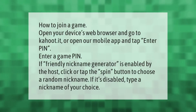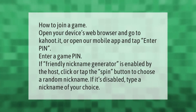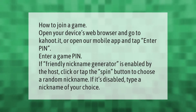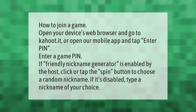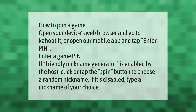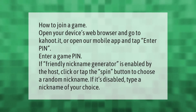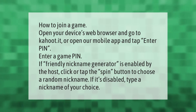How to join a game: open your device's web browser and go to kahoot.it, or open our mobile app and tap 'Enter Pin.' Enter a game pin. If a friendly nickname generator is enabled by the host, click or tap the spin button to choose a random nickname.